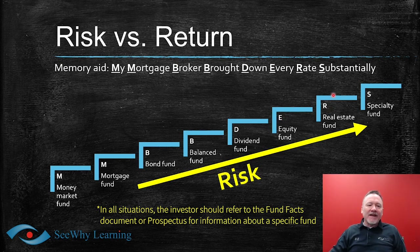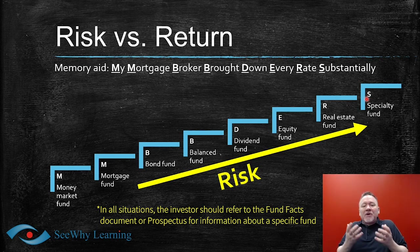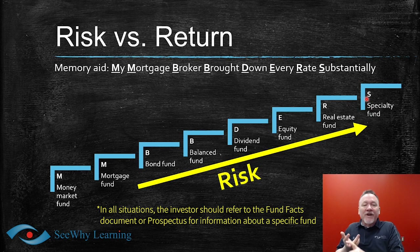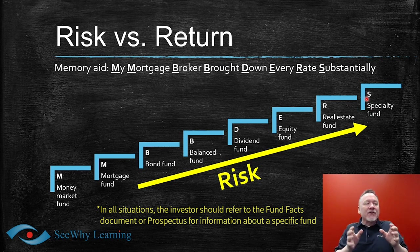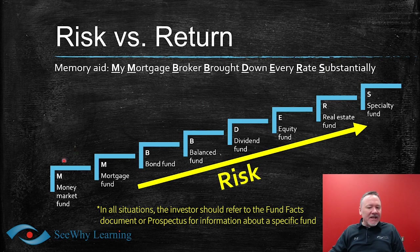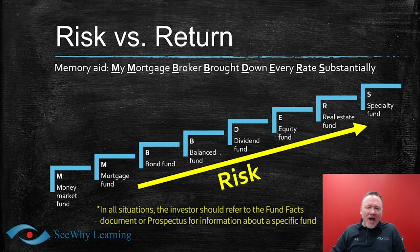At the very highest end of the risk-return relationship we have real estate funds and specialty funds. Specialty funds carry the largest amount of risk. A specialty fund might have 100% equities or something other than equities — commodities, precious metals, derivatives, funds devoted to oil, gas, gold, silver, or platinum. Given the level of risk behind each type of fund, it's very important to know your client and truly understand their risk tolerance, investment objectives, time horizon, and personal financial circumstances. All things being equal, it's always better to err on the side of caution.